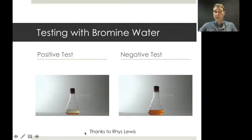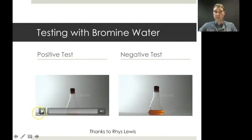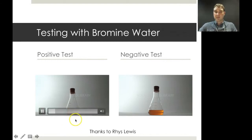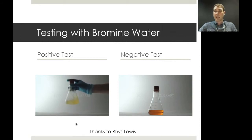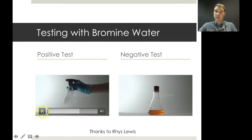Let's look at some videos of the bromine water test. Here is the positive test: bromine water is sitting at the bottom of a conical flask with the triglyceride on top. When shaken, we can see the brown colour from the bromine water disappearing — going from brown to colourless — confirming the presence of a carbon-carbon double bond. The brown colour has gone completely, leaving a colourless solution.